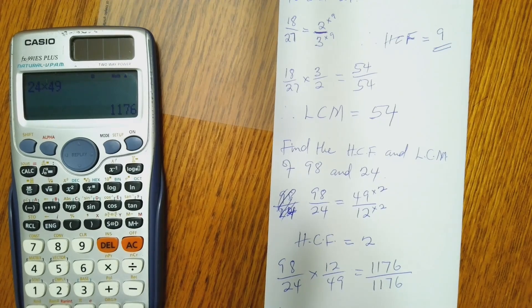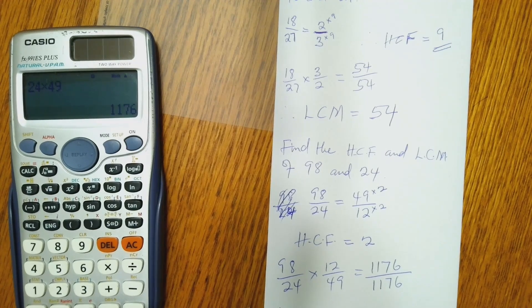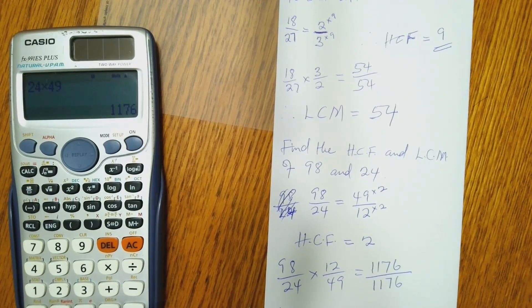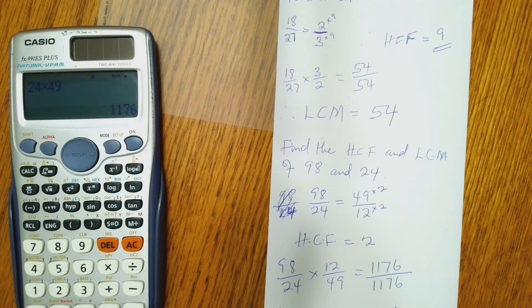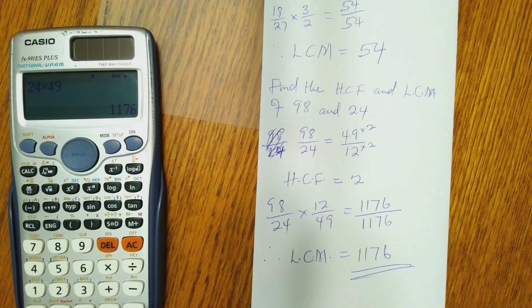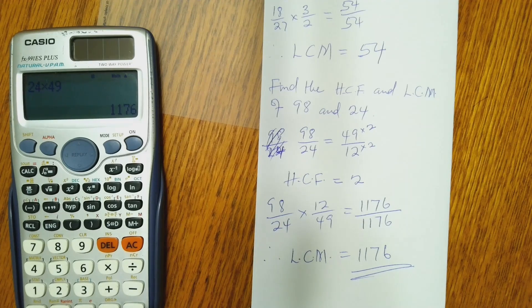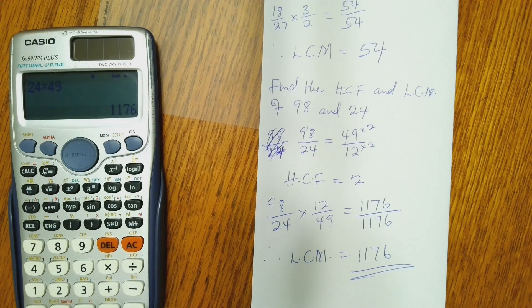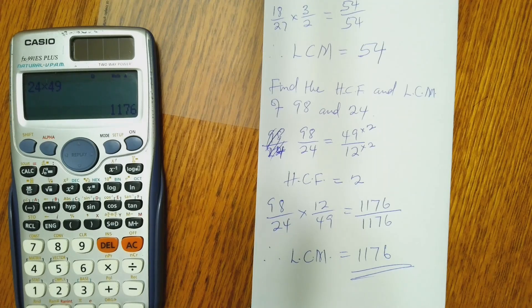That means our LCM for 98 and 24 is 1176. So that means that when you are answering multiple choice questions where you are required to find the HCF or LCM of 2 or more numbers. If the numbers are more than 2, you just have to do 2 at a time.